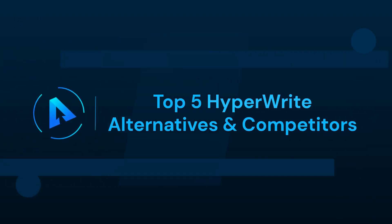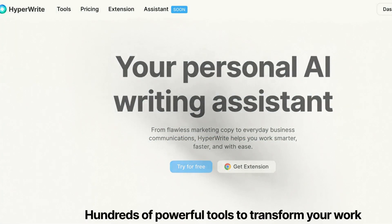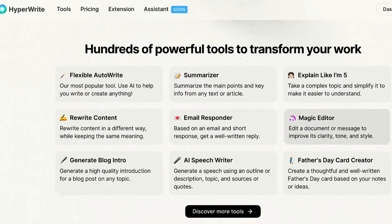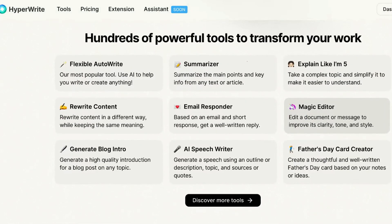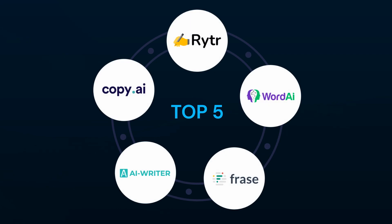In this video, we can talk about the top 5 HyperWrite alternatives and competitors. Hi everyone, welcome to our Alternatives Koo channel. If you have come here looking for alternatives for WordTune, then hold on. Today in this video, we will be talking about the top 5 alternatives of HyperWrite, including Copy AI, Writer, Word AI, Phrase.io, and AI Writer. These remarkable alternatives are poised to revolutionize the way you craft content and automate your workflows. So, without further ado, let's embark on the exploration of these alternatives.